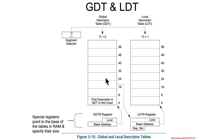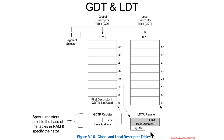While the table indicator bit says which table we're pointing at, the actual tables themselves are located via special-purpose registers. There's a GDT register that points at a memory location for the GDT, and an LDT register that points at a memory location for the LDT. The LDT register behaves like a segment register — there's only a 16-bit area visible to us that can be set, and a hidden portion that acts as a cache of information from the other table.